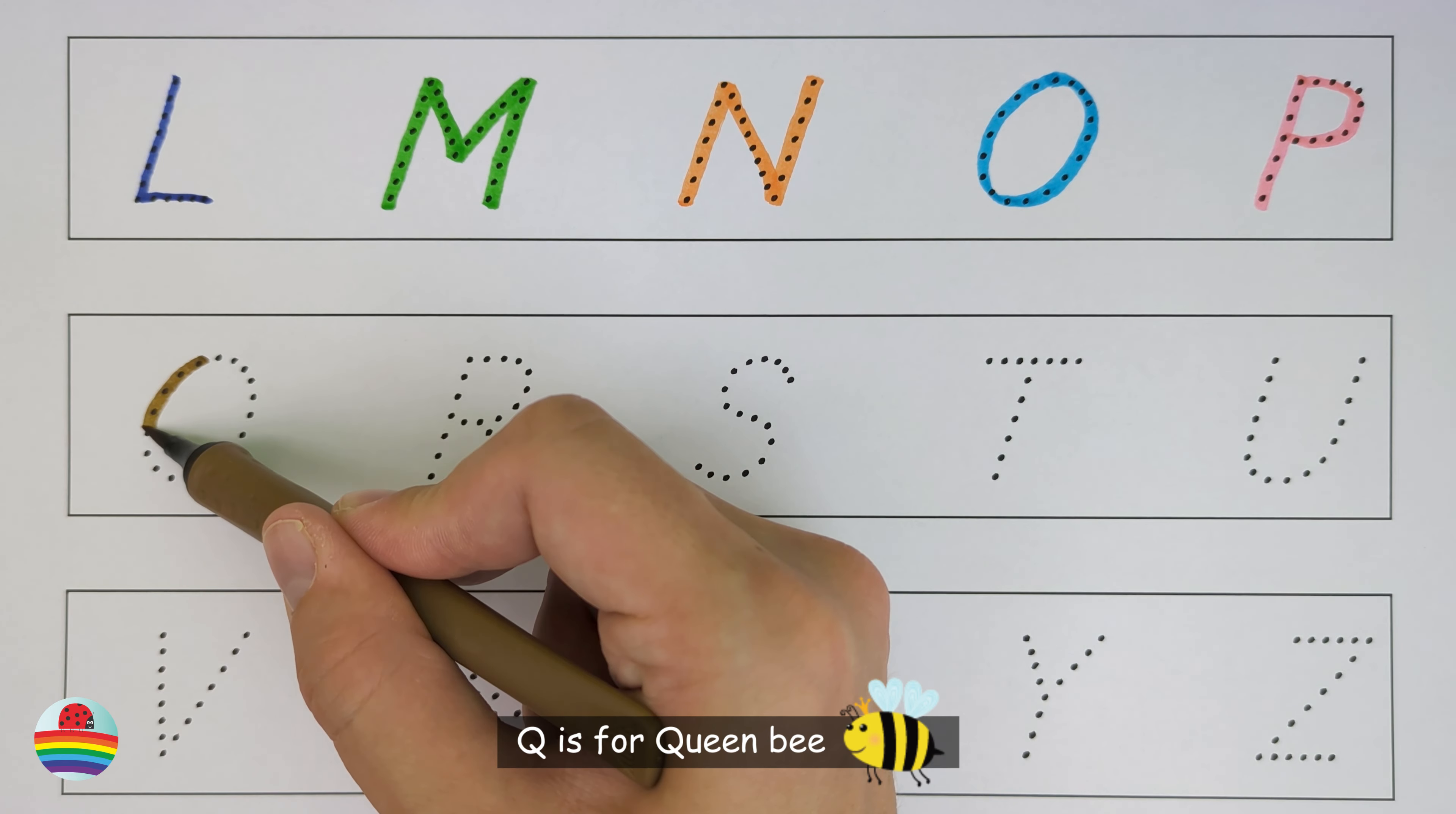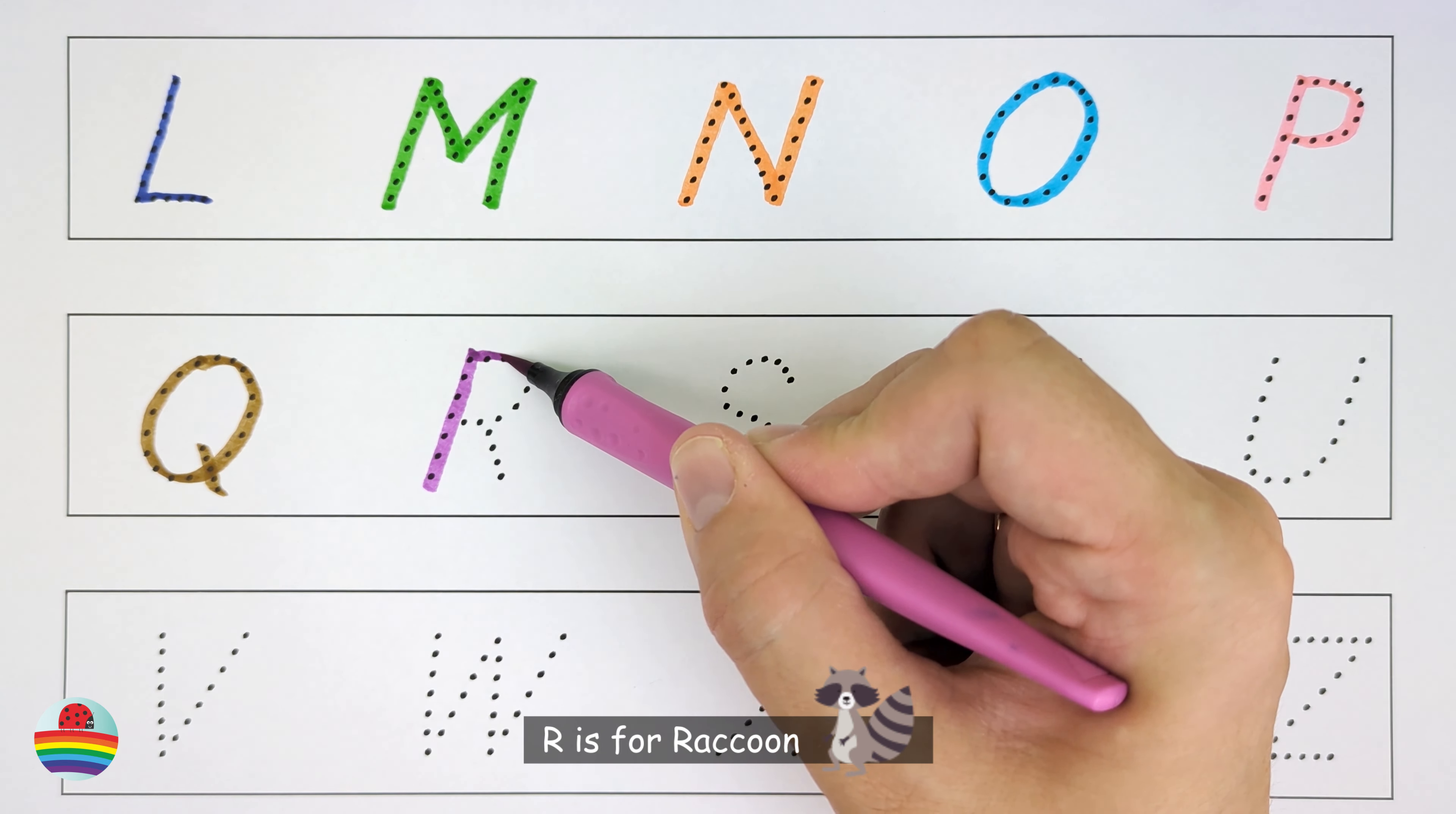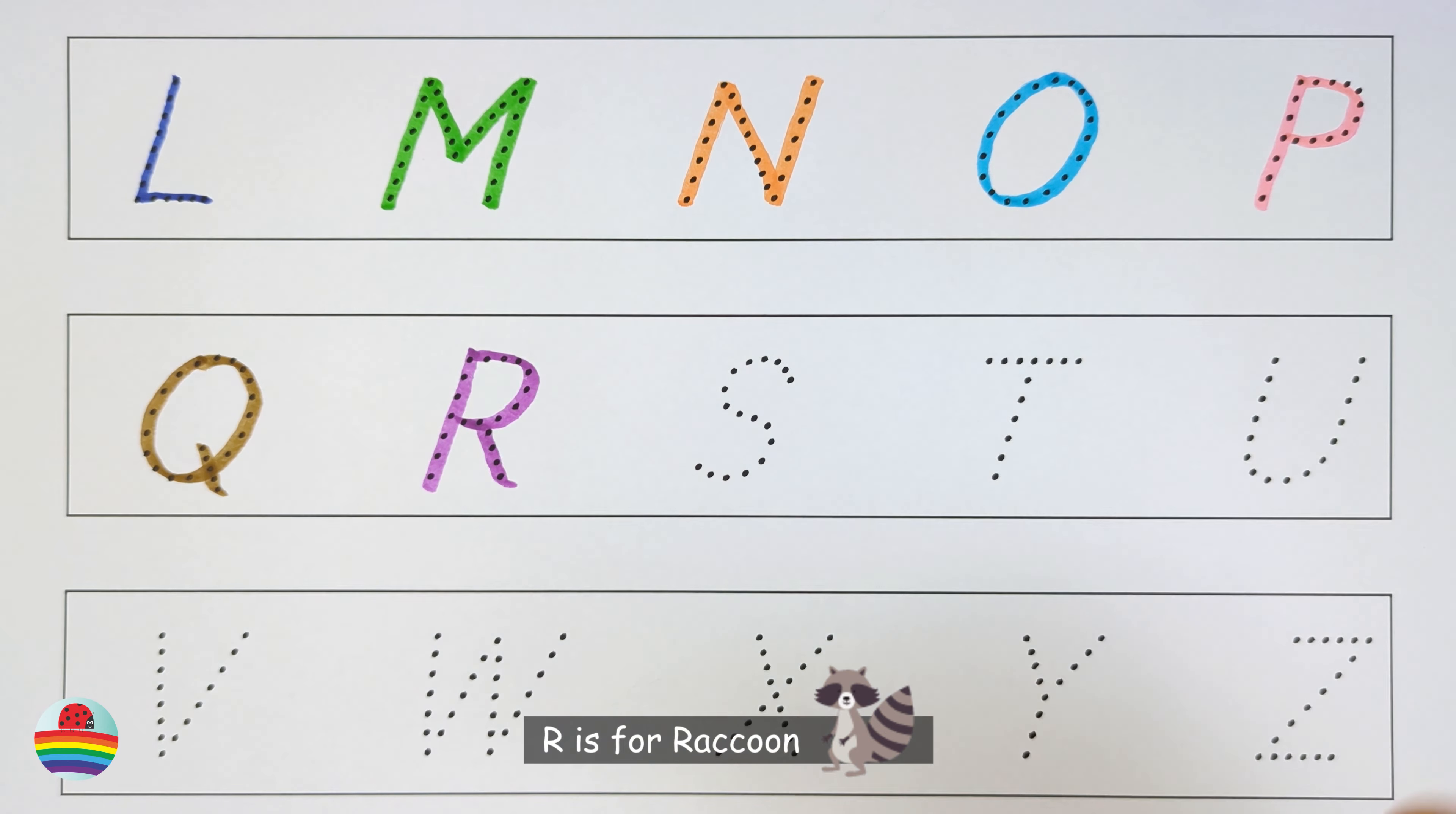Q. Q is for Queen Bee. Q. R. R is for Raccoon.